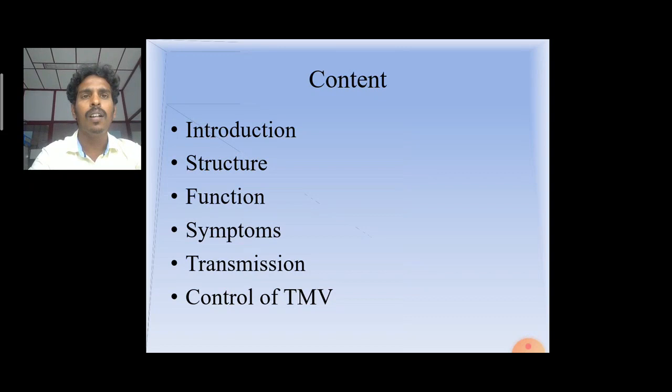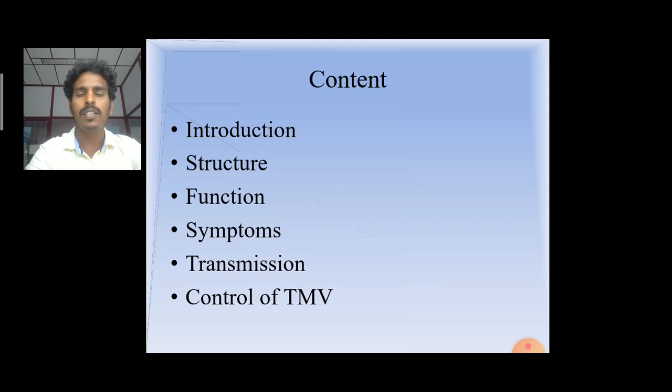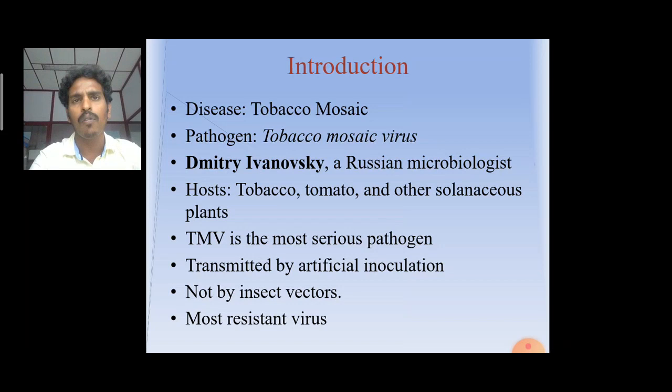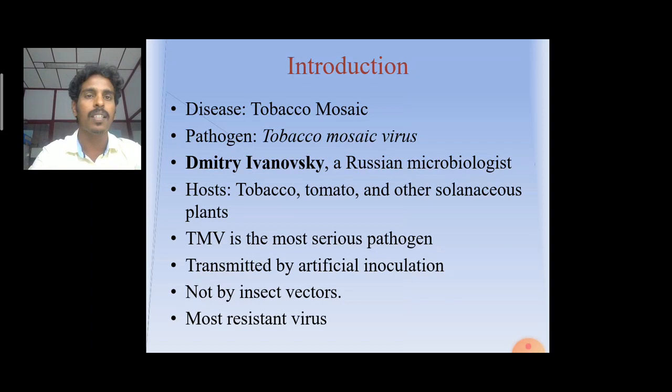It is a disease. The disease name is tobacco mosaic disease and the pathogen is named tobacco mosaic virus. This virus was identified by Timothy Ivanovsky, a Russian microbiologist. The host plant for this virus is tobacco and other solanaceae families. TMV is the most serious pathogen and is transmitted by artificial inoculation, not by insect vectors.